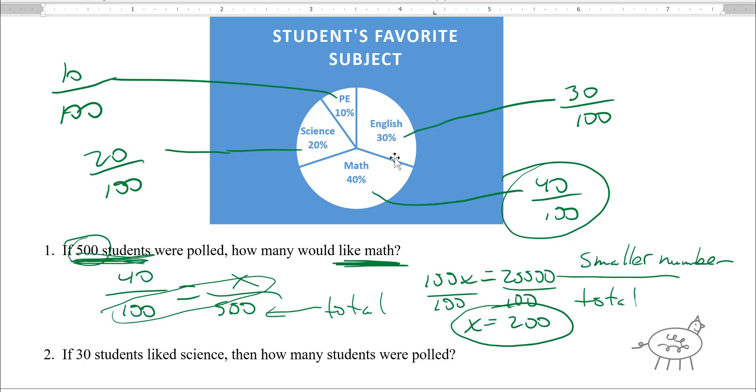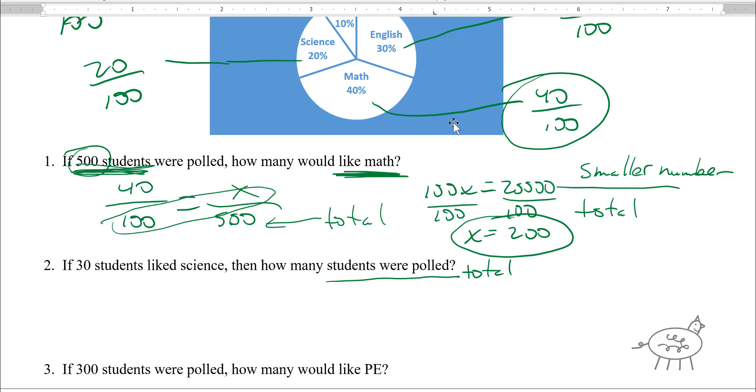So remember the total. This next one says if 30 students like science, that's my small number. I want to know how many students were polled, so that's the total. Science is 20 over 100, so we're going to write 20 over 100 equals, the total is what I don't know, and I know 30 students like science. So you cross multiply, you get 20x equals 3,000. Then you divide by 20, and you get x equals 150.